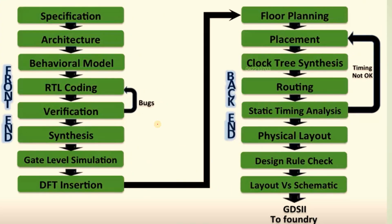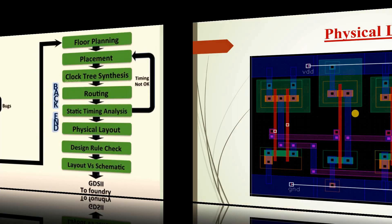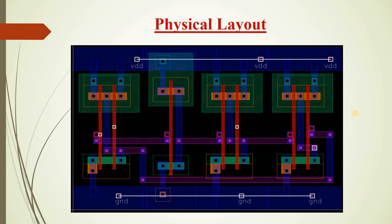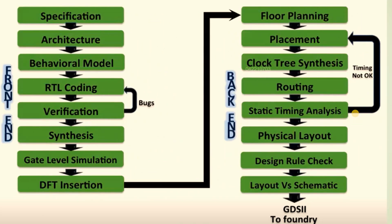The next step is physical layout. After doing physical layout, we perform different kinds of checks: design rule check, layout versus schematic check, antenna check, electric rule check, and power checks. Physical verification involves generating the layout and then running all these checks.